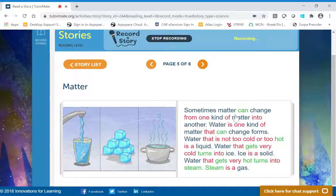Sometimes, matter can change from one kind of matter into another. Water is one kind of matter that can change forms. Water that is not too cold or too hot is a liquid. Water that gets very cold turns into ice. Ice is a solid. Water that gets very hot turns into steam. Steam is a gas.